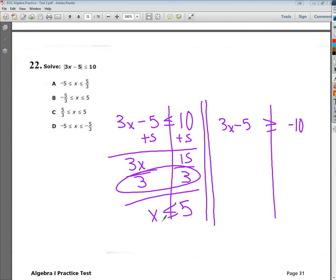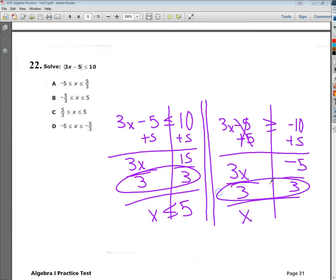x is still less than 5. On the other side, I'm going to add 5. I end up with negative 5 here. These cancel, I'm going to bring down 3x, divide by 3. Once again, no flipping.